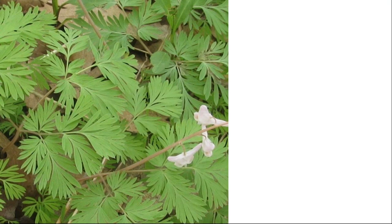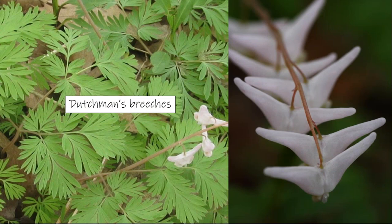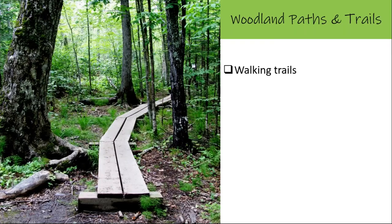Dutchman's breeches — these patches spread throughout the woodland. The flowers are adorable, looking like little pantaloons hanging upside down on a clothesline — thus the common name. The airy looking leaves are lovely, and the patches I have are growing to maybe four to five feet in diameter as they seed themselves and spread.